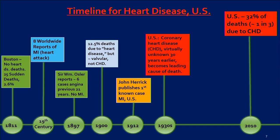This is the timeline for heart disease over the past couple of hundred years here in the United States. In 1811 Boston, no heart disease deaths, but 25 sudden deaths — that's 2.6%. So even if all of those are heart disease, it's 2.6% of cases. The entire 19th century, there are only eight worldwide published papers on heart attack. In 1897, Sir William Osler, famed physician at Johns Hopkins Hospital, reported in his previous 21 years of hospital experience about six cases of angina, but not a single MI — not a single heart attack.